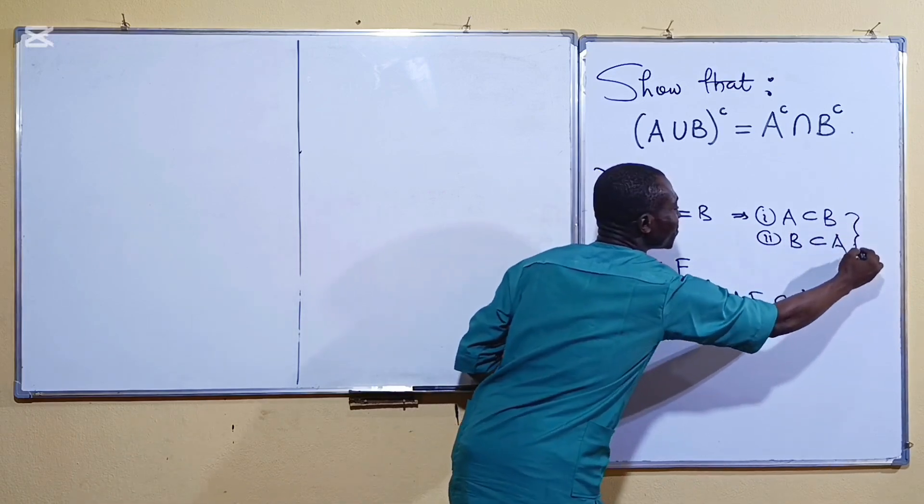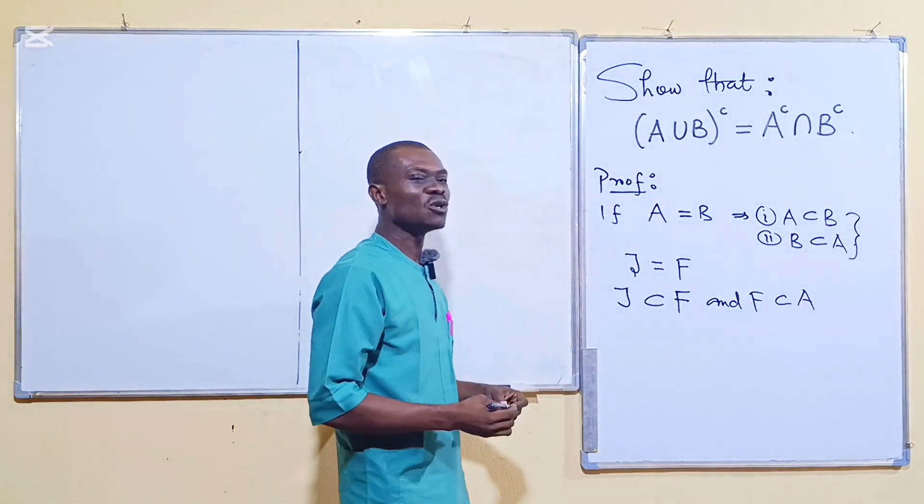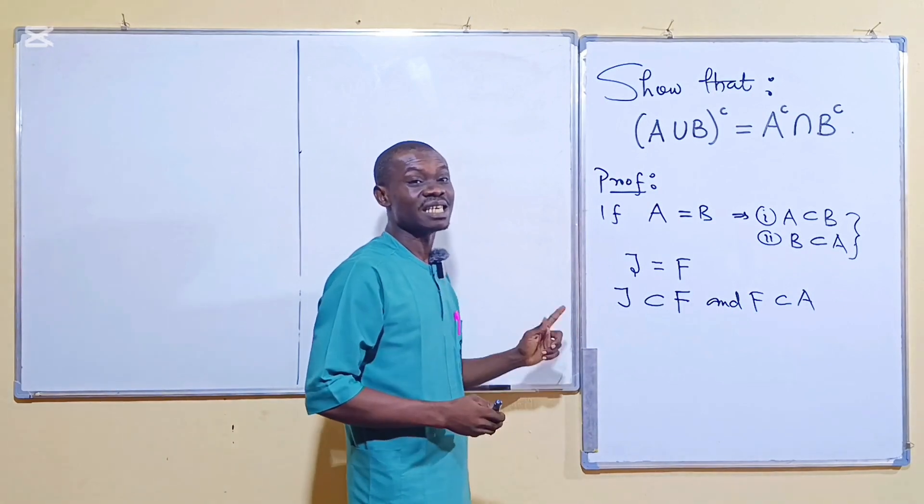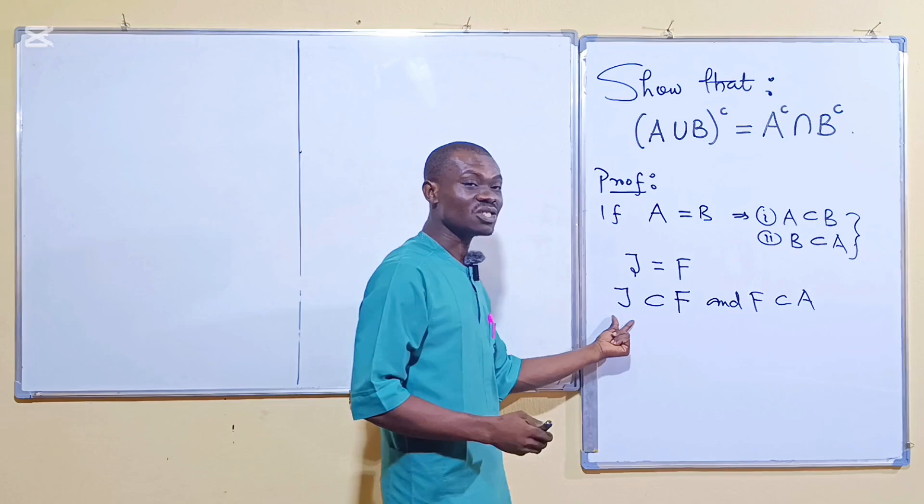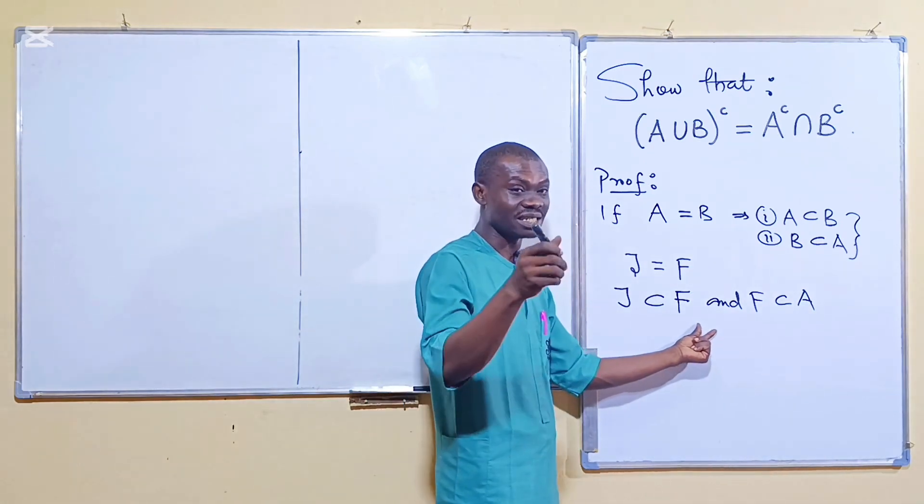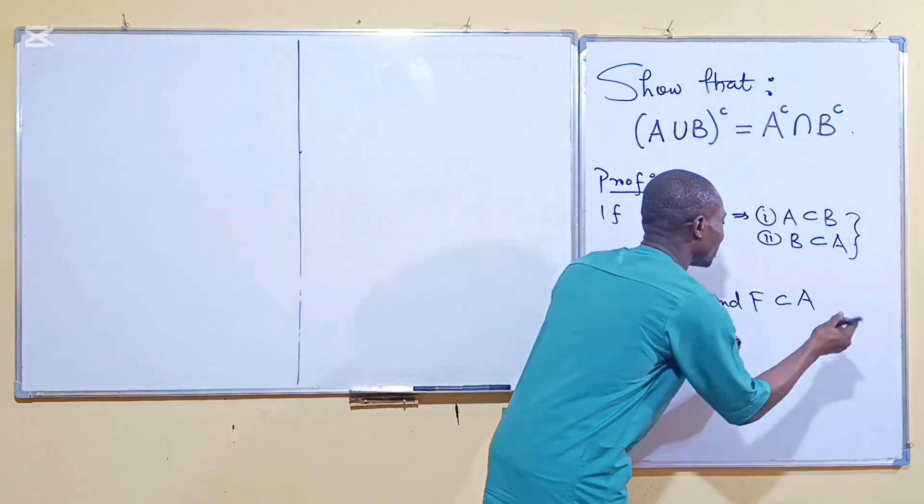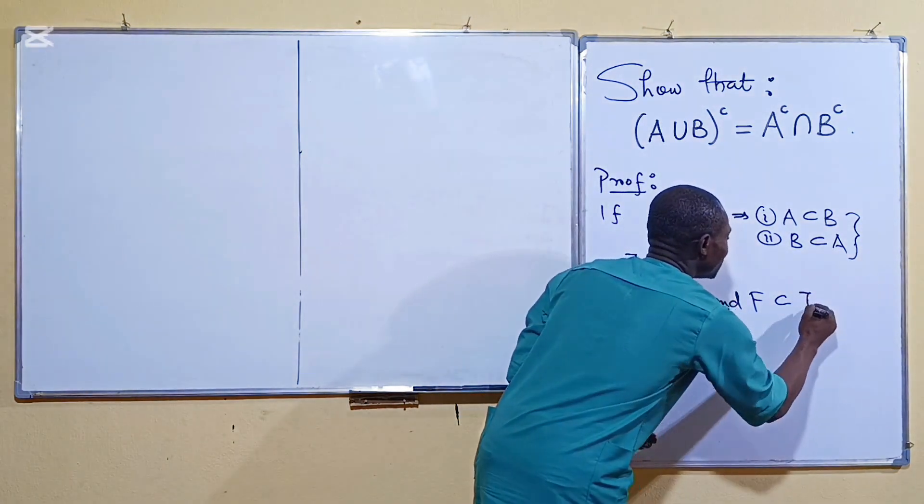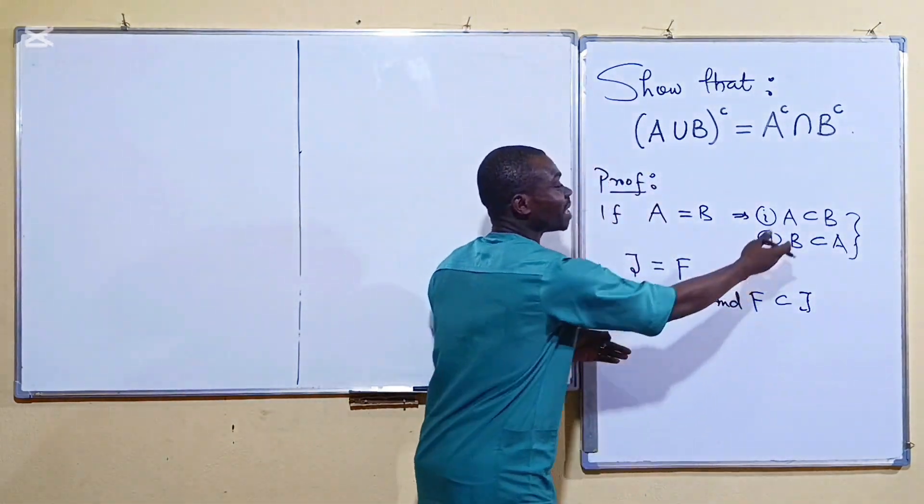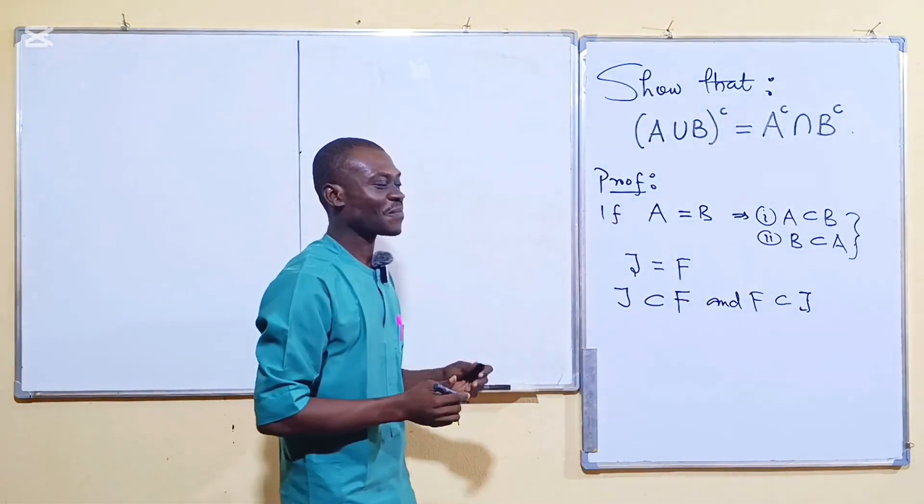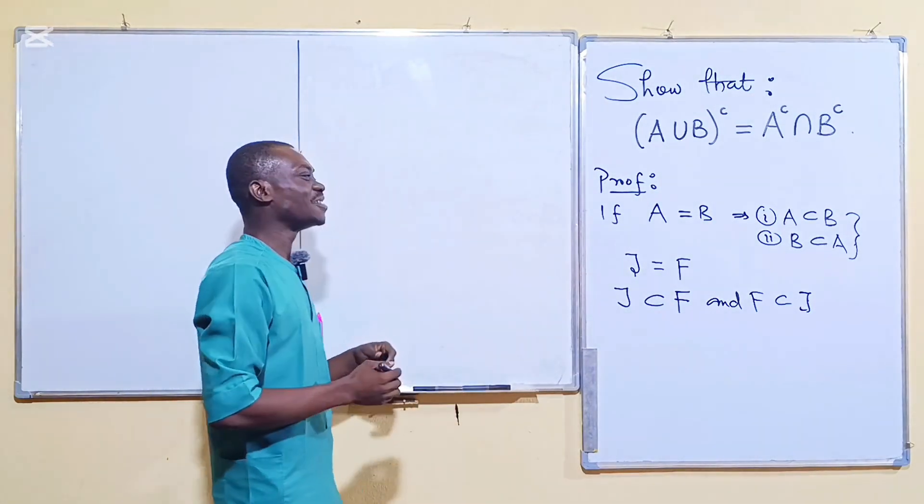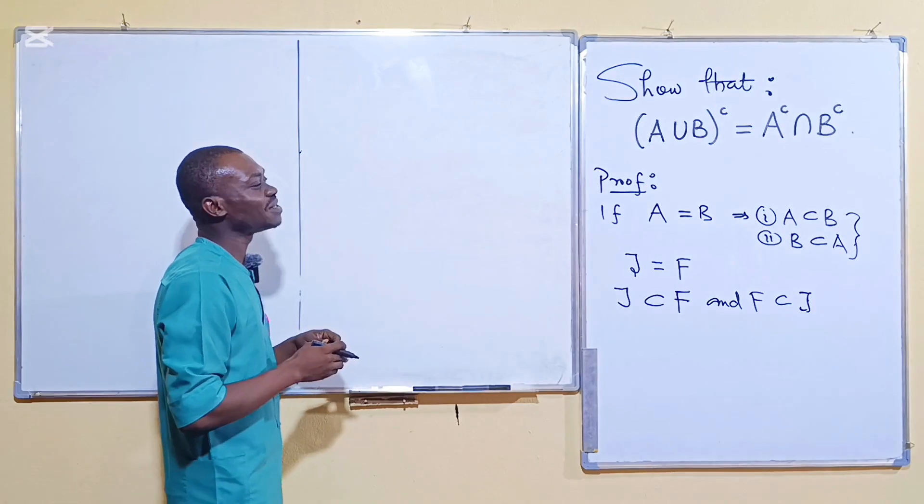So there he implies that he Jesus is in his father and his father is in him, satisfying the two requirements for equality. So you cannot doubt that Jesus is God because Jesus said he is in his father and his father is in him. So that means mathematically it is true that Jesus is God. So back to what we are doing.